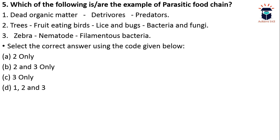A parasitic food chain starts from herbivores at the base. For example: a tree is eaten by fruit-eating birds; lice and bugs live on the birds and extract energy from them; bacteria and fungi further decompose the lice and bugs when they die. The third option is also correct: a zebra (herbivore) feeds on vegetation; after its death, nematodes reside on or decompose its body; filamentous bacteria further decompose it. This is a parasitic food chain where one organism depends on another as its host.